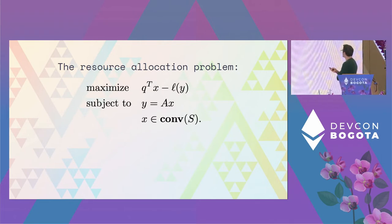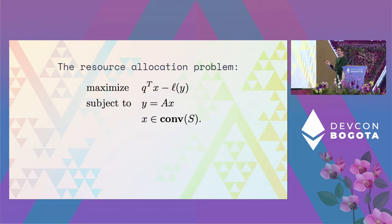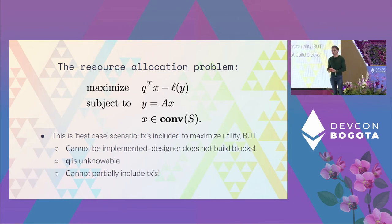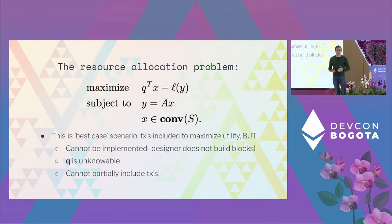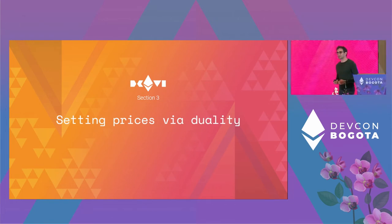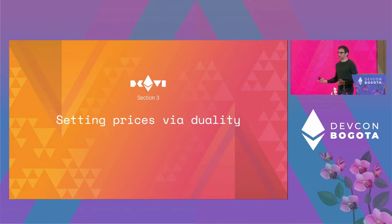The resource allocation problem is to maximize the utility of transactions minus the loss incurred by the network, subject to resource utilization being defined by included transactions and transactions being allowable. This is the ideal best-case scenario. We can use convex analysis and duality theory to take this problem and turn it into a way to set prices so that validators and users — the transaction producers — implicitly solve that optimization problem without the network designer needing to know Q or deal with fractional transactions. Just update prices in a very simple way.